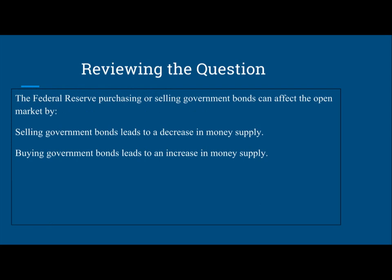Let's review the question. The Federal Reserve has the power to purchase or sell government bonds, and that can affect the open market. Selling government bonds leads to a decrease in money supply, and buying government bonds leads to an increase in money supply.